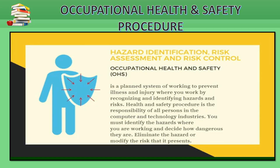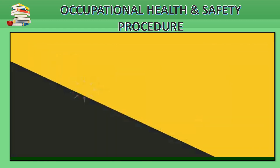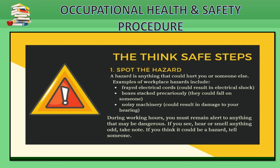Health and safety procedure is the responsibility of all persons to the computer and technology industries. You must identify the hazards where you are working and decide how dangerous they are. Eliminate the hazard or modify the risk that it presents. The think safe steps: number one — spot the hazard. A hazard is anything that could hurt you or someone else. Examples of workplace hazards include frayed electrical cords, boxes stacked precariously, and noisy machinery. During working hours, you must remain alert to anything that may be dangerous.